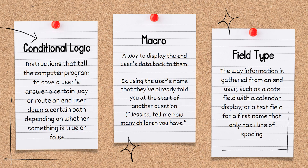A macro is a way to display the end user's data back to them. For example, using the user's name that they've already told you at the start of another question, like, "Jessica, tell me how many children you have."